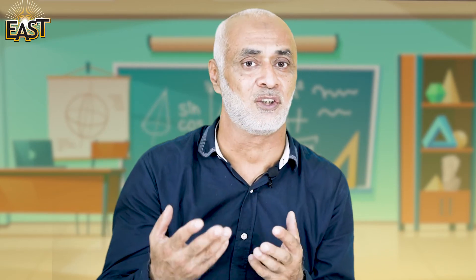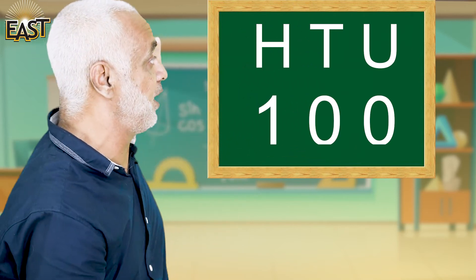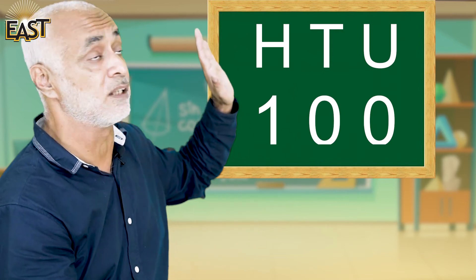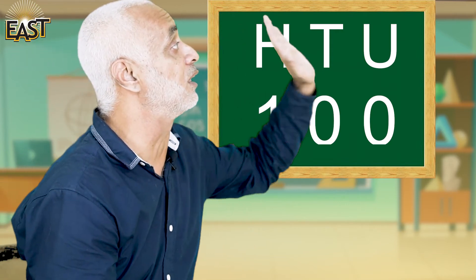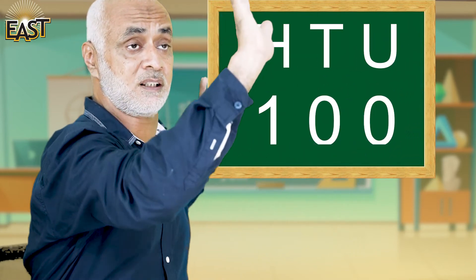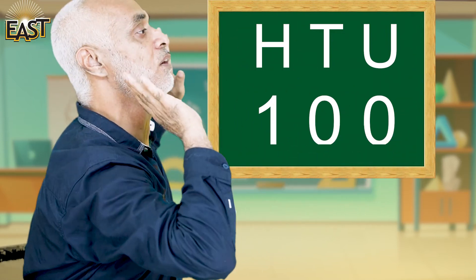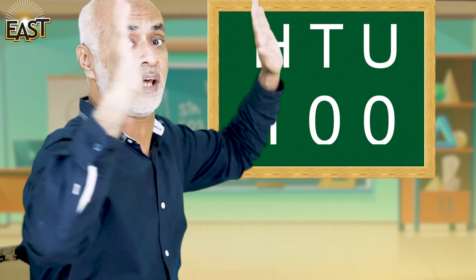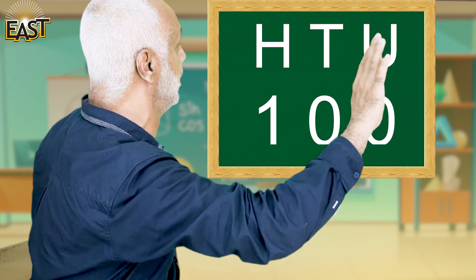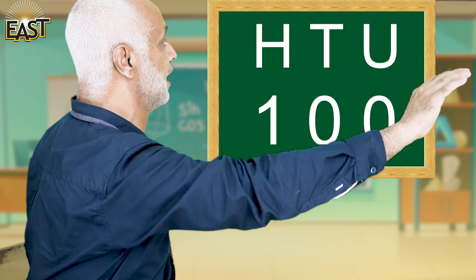Where do we write the hundred? On the left. And where do we write the unit? On the right. Raise your right hand — unit is on the right. Hundred is on the left and unit is on the right. Let's do it together: hundred on the left, unit on the right, and ten comes in between.